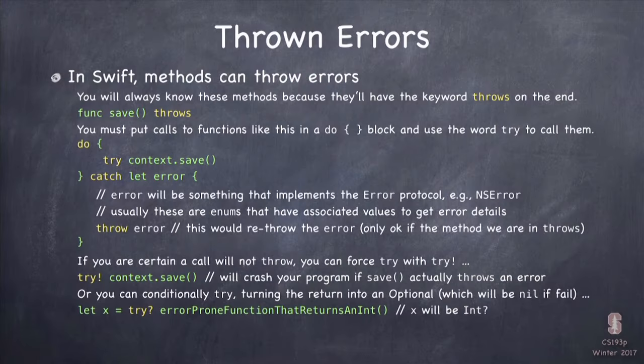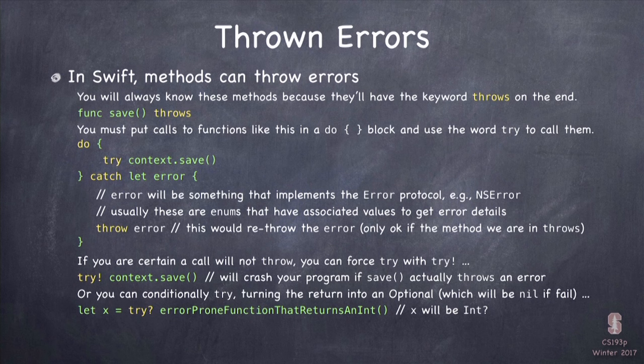There's yet another version: 'try?'. 'Try?' means try to call this method that throws, and if it does throw, just give me back nil. For that to work, the variable that we're assigning the result to becomes an optional version of whatever the method returns. So if I have an error-prone function that returns an Int, the variable 'x' assigned with 'try?' will be an optional Int. With 'try?' I don't get to look at the error — I'm ignoring it. It's a very simple error mechanism that works quite well in Swift.